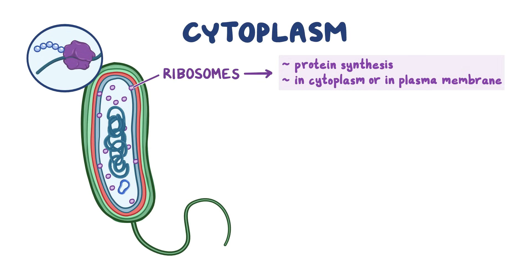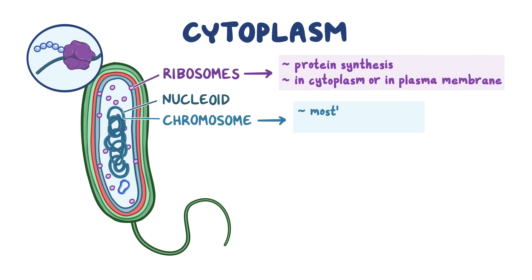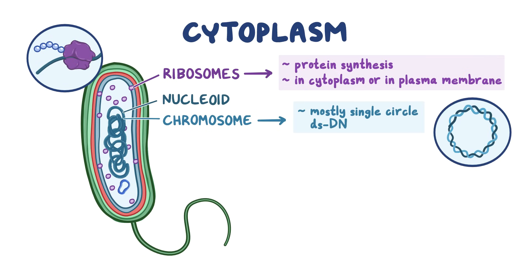Another structure found in the cytoplasm is the nucleoid, which is an irregularly shaped region that contains the cell's chromosome. The chromosomes of most bacteria are a single circle of double-stranded DNA. But some bacteria can have a linear chromosome, while others can have more than one chromosome, and these chromosomes contain the genes needed to provide instructions for protein synthesis in the cell.